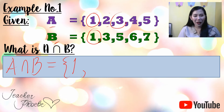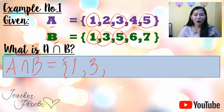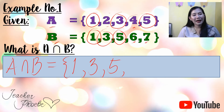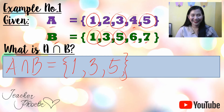Next, check 3 — it is common, so we write it down. Check 4 — not common. Check 5 — is there a match? Yes. Then check 6 — no match in A. Check 7 — no match in A either. So we only list the common elements. Therefore, the intersection of A and B is {1, 3, 5}.